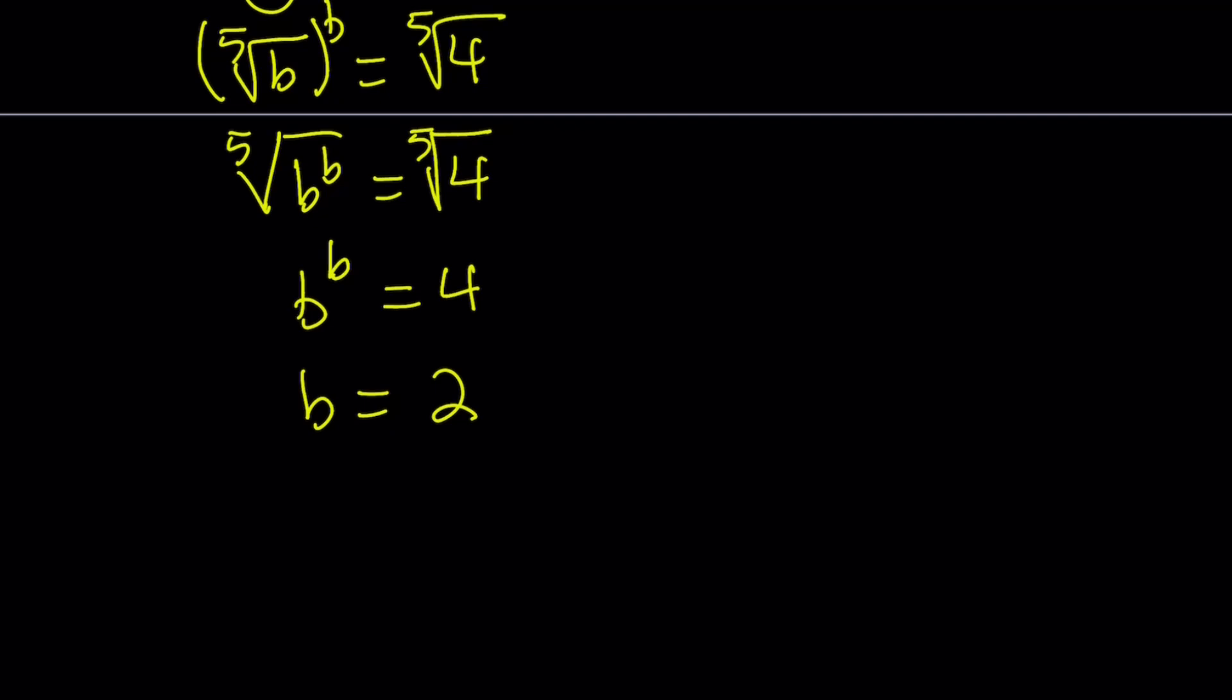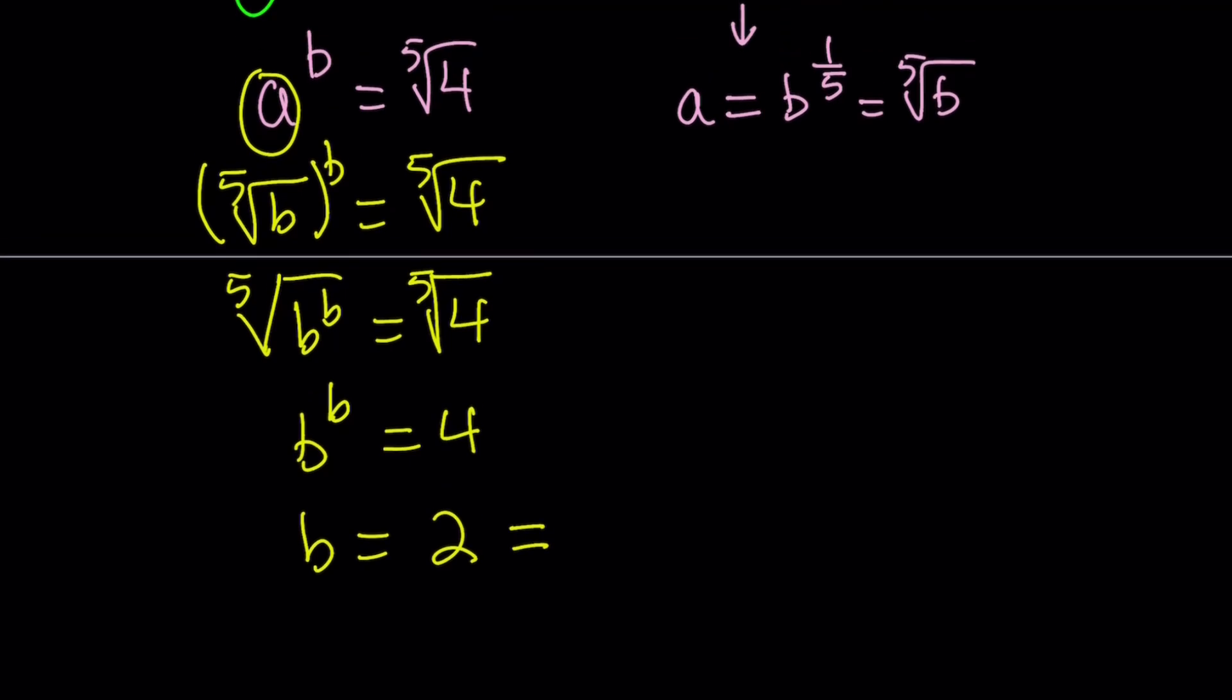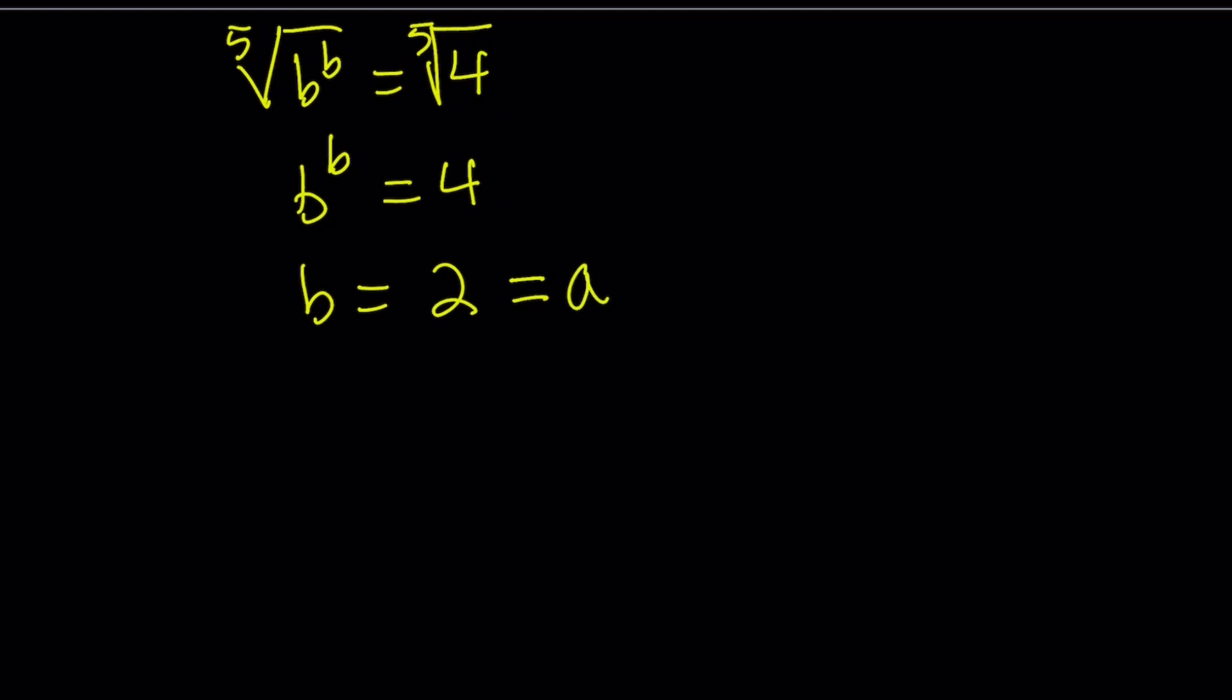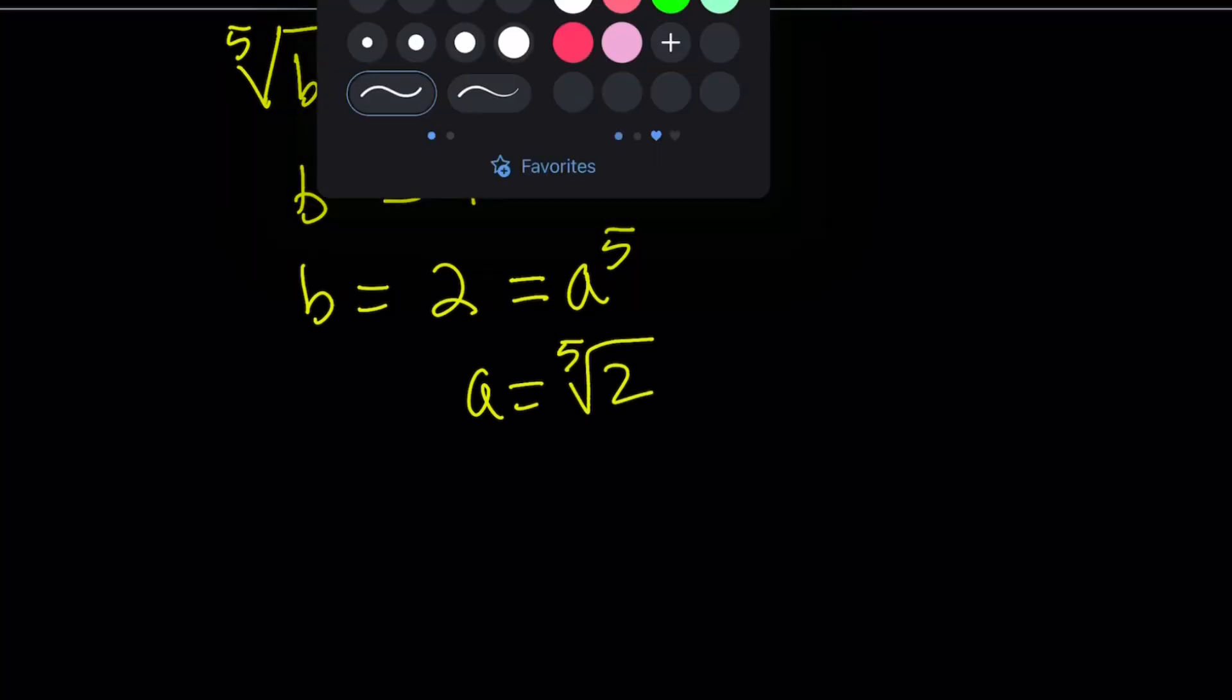Now, we have b = 2, and b is the fifth power of a, so b can be written as a^5. From here, a becomes the fifth root of 2. That's what we were looking for. That brings us to the end of the first method, and the beginning of the second method.